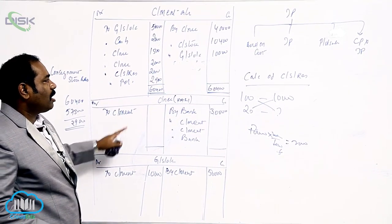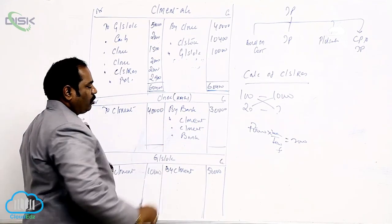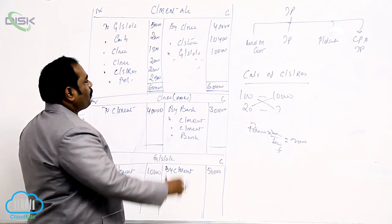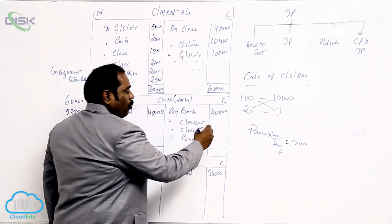Now consignment is what? Sales. What is sales made by the consignee? 40,000. By consignment is for expenses made by consignee. What is the expense made by consignee given the problem? 1,500.